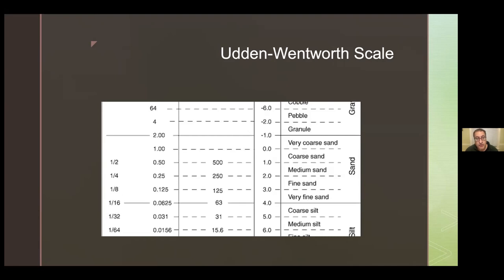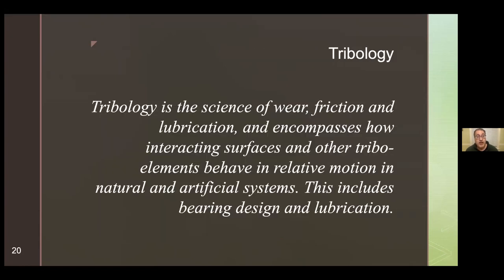The width of a human hair is often given as a reference point for the diameter of a grain of sand. Much of the scientific work around the properties and behaviors of sand is based upon a principle known as tribology — the science of wear, friction, and lubrication, encompassing how interacting surfaces behave in relative motion. Practically speaking, this is all about how and why a mound of sand holds its shape until of course it doesn't — and it all crumbles and falls apart.